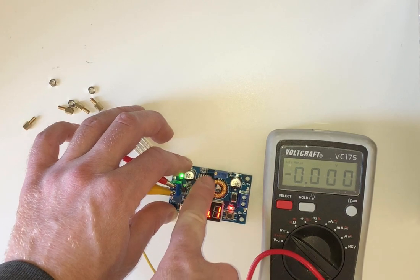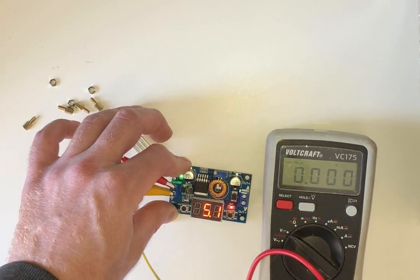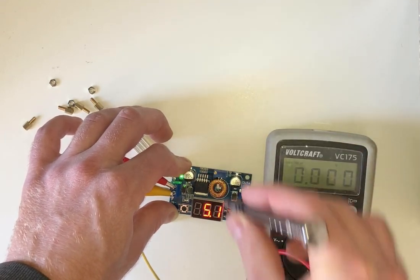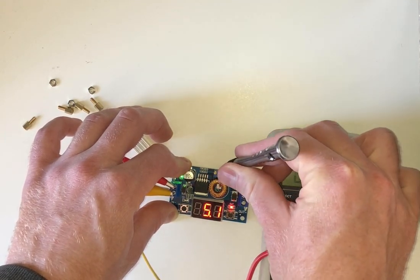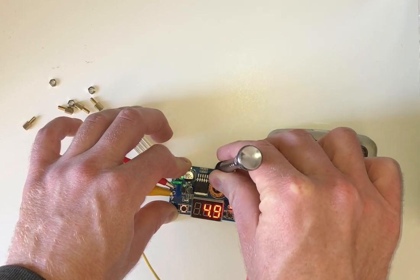The output voltage is controlled with this little trim pot. So you just take your screwdriver and change this and you will raise and lower the output voltage. So if I do this now you'll see I'm changing the output voltage.